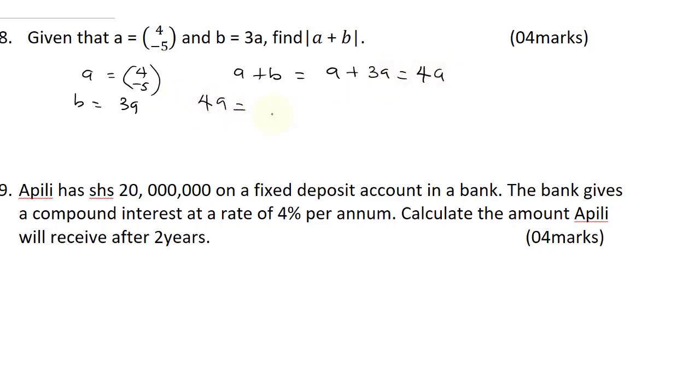So 4A will be 4 multiplied by 4 times minus 5. This is going to give me 4 times 4 is 16, and 4 times minus 5 is minus 20. The magnitude of A plus B is now going to be, remember, A plus B is the same thing as 4A. It's now going to be 16 squared plus minus 20 all squared, the square roots. That's how you find the magnitude of a vector.